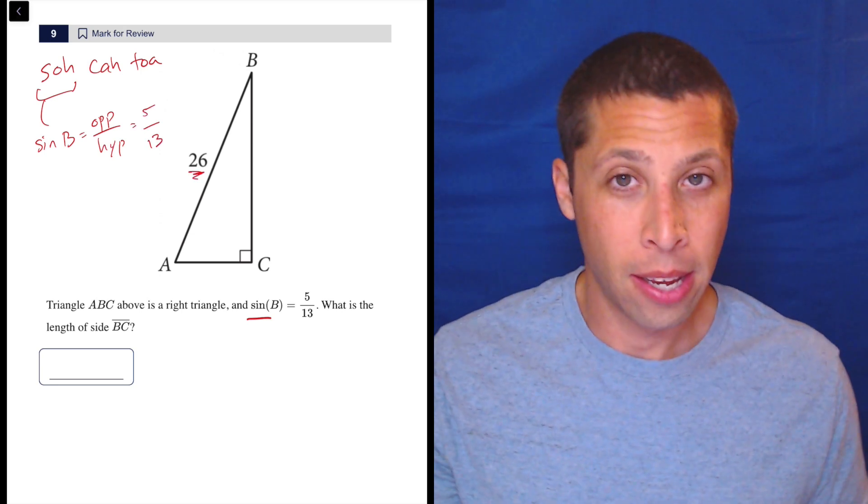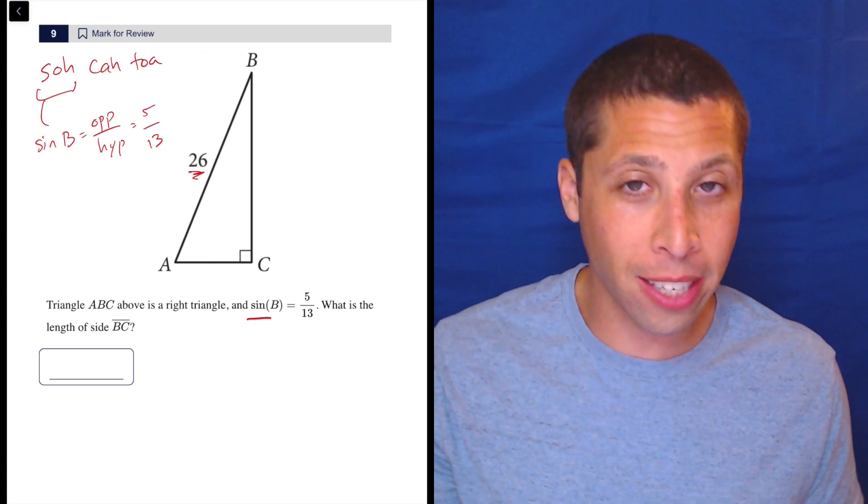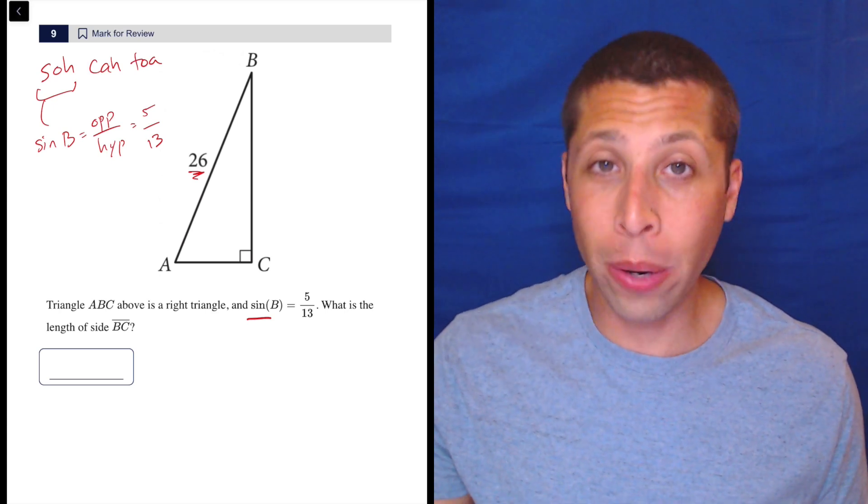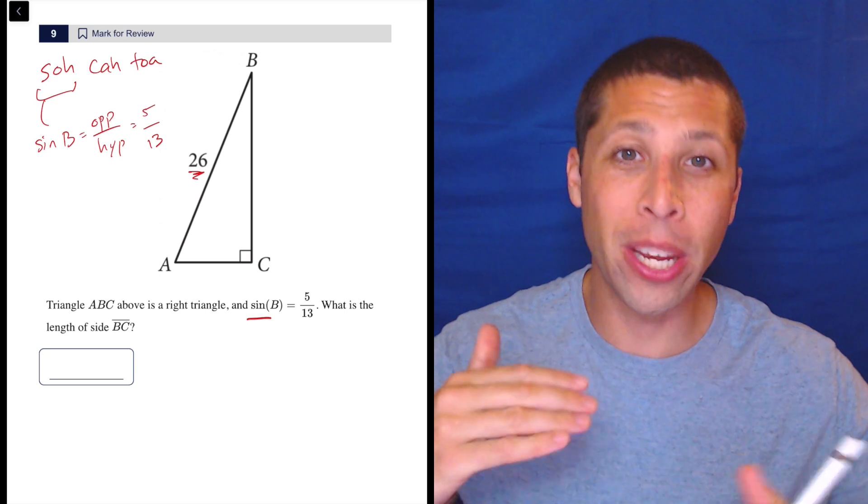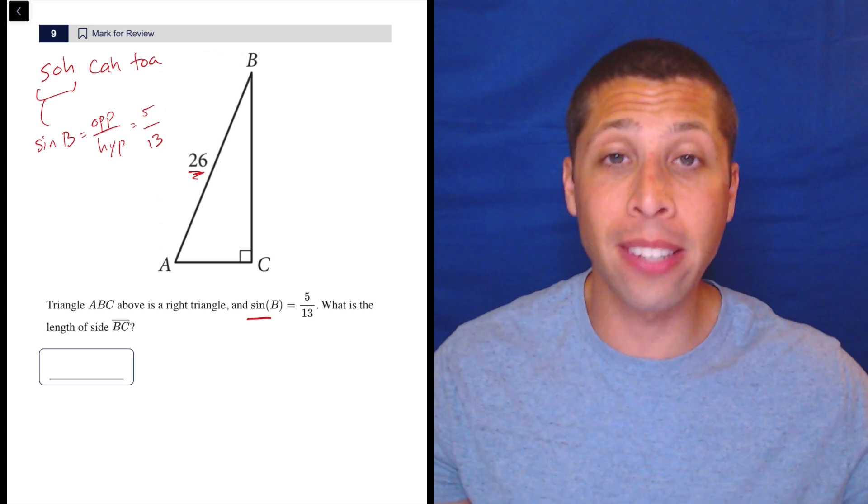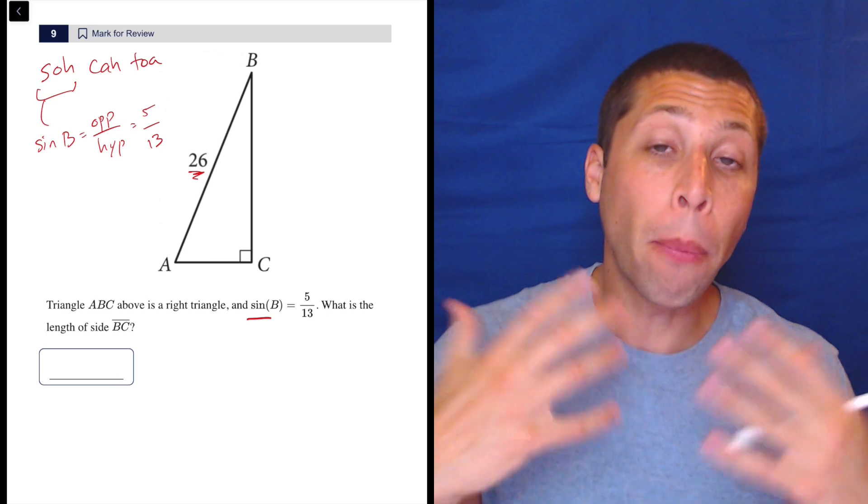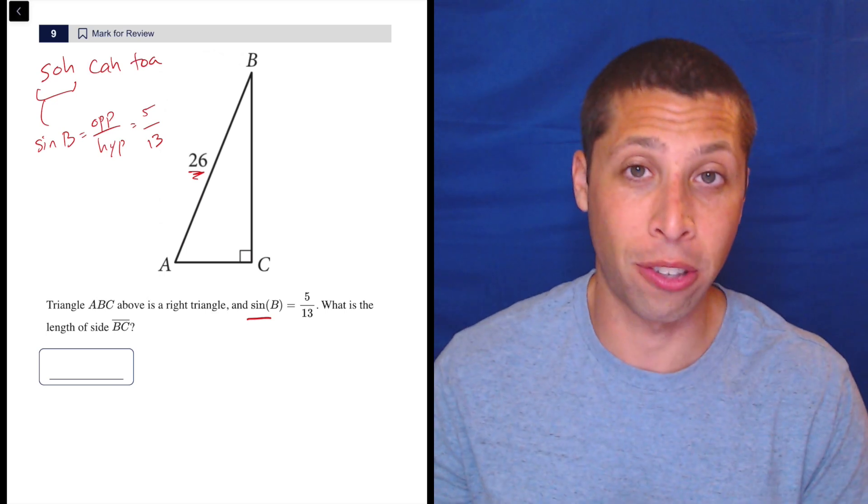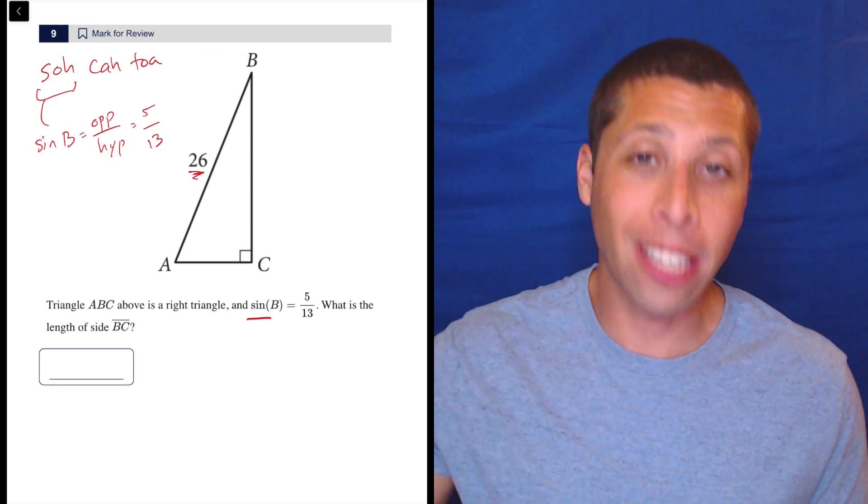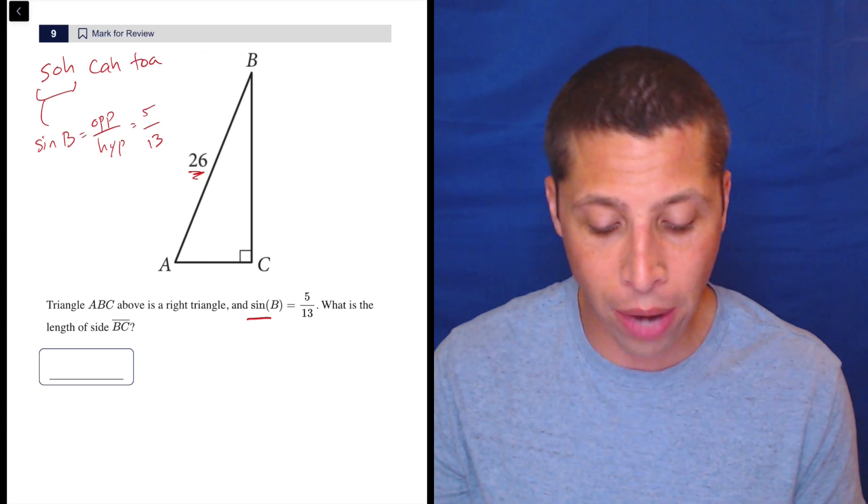But wait a minute, it says that the hypotenuse is 26. What's going on? Well remember, the whole point of trigonometry is that we have different triangles, they're all different sizes, but if we understand the angle, we realize that the proportions are the same. So it doesn't matter how big or small it is, it's going to reduce to the same things. This is a reduced fraction.